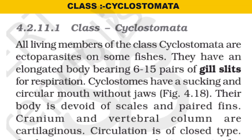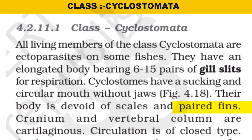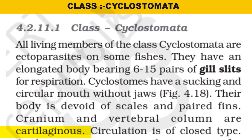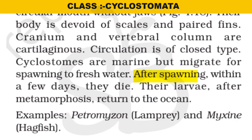Cyclostomates are called Ectoparasites. The body is attached to another organism's body as food. They have an elongated body with 6 to 15 gill slits for respiration. Cyclostomata means circular mouth — they are jawless. The body is devoid of scales and paired fins, only unpaired fins are present. The cranium and vertebral column are cartilaginous. Circulation is closed type. They are marine animals that spawn, and for reproduction they migrate to freshwater.